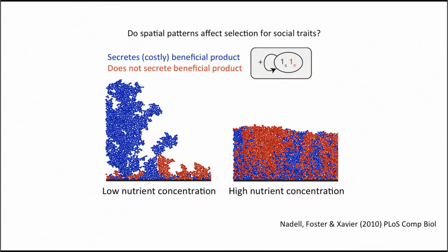A paper that just came out a couple of weeks ago was an experimental test of this. We used our colony system where the phenotype we were looking at was secretion of enzymes to break down antibiotics. We could show that cells resistant to an antibiotic succeed or not depending on whether they're in a well-mixed or a segregated environment. I won't present this work today but recommend you go and read this paper.